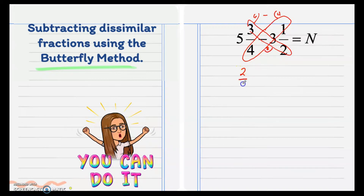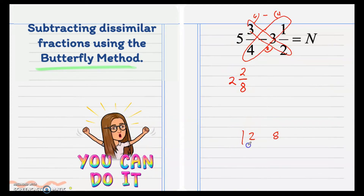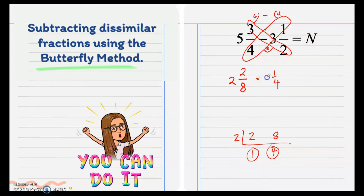So our answer is 2/8. Then we also subtract the whole numbers: 5 minus 3 is 2. Then we simplify: 2/8 simplifies to 1/4. And don't forget to write the whole number, which is 2. So our final answer is 2 and 1/4.